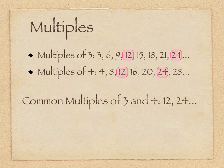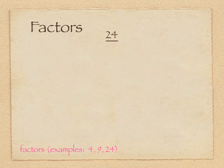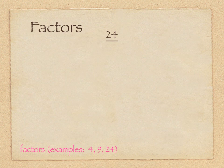And obviously this would continue as well. There's many more common multiples of three and four. The next one, for instance, would be thirty-six. Now that we have an understanding of multiples, let's try to connect it with factors.